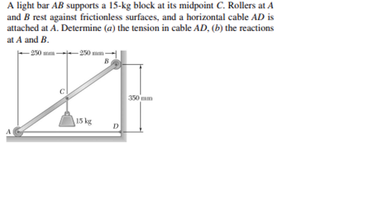A light bar AB supports a 15 kg block at its midpoint C. We can see that the bar from A to B has a block of 15 kg suspended at its center. Rollers at A and B rest against frictionless surfaces. You can see that on the surface of the wall, we have a roller and at A, we also have a roller. And a horizontal cable AD is attached at A. So this is cable AD.